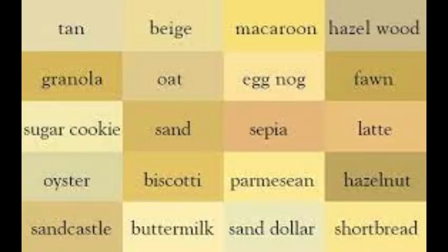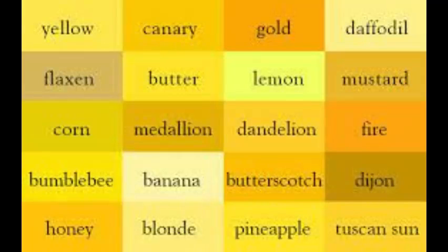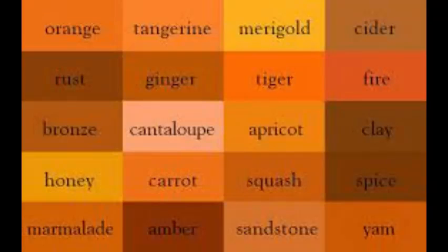Up next is yellow. Here are its shades: yellow, canary, gold, daffodil, flaxen, butter, lemon, mustard, corn, medallion, fire, bumblebee, banana, butterscotch, dijon, honey, blonde, pineapple, and tuscan sun.